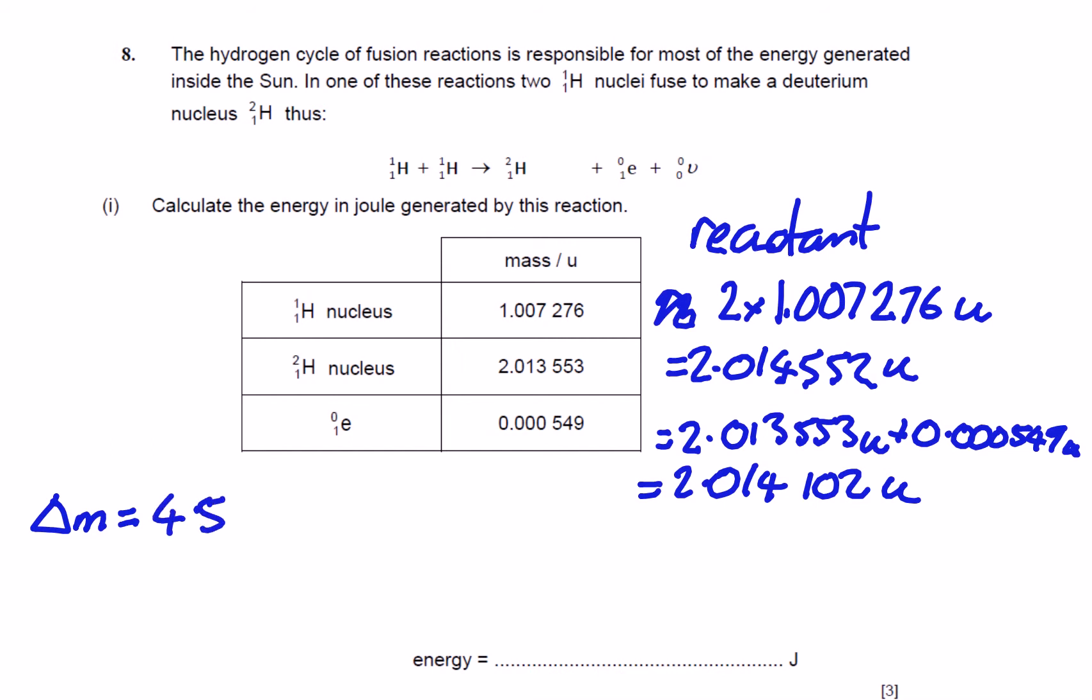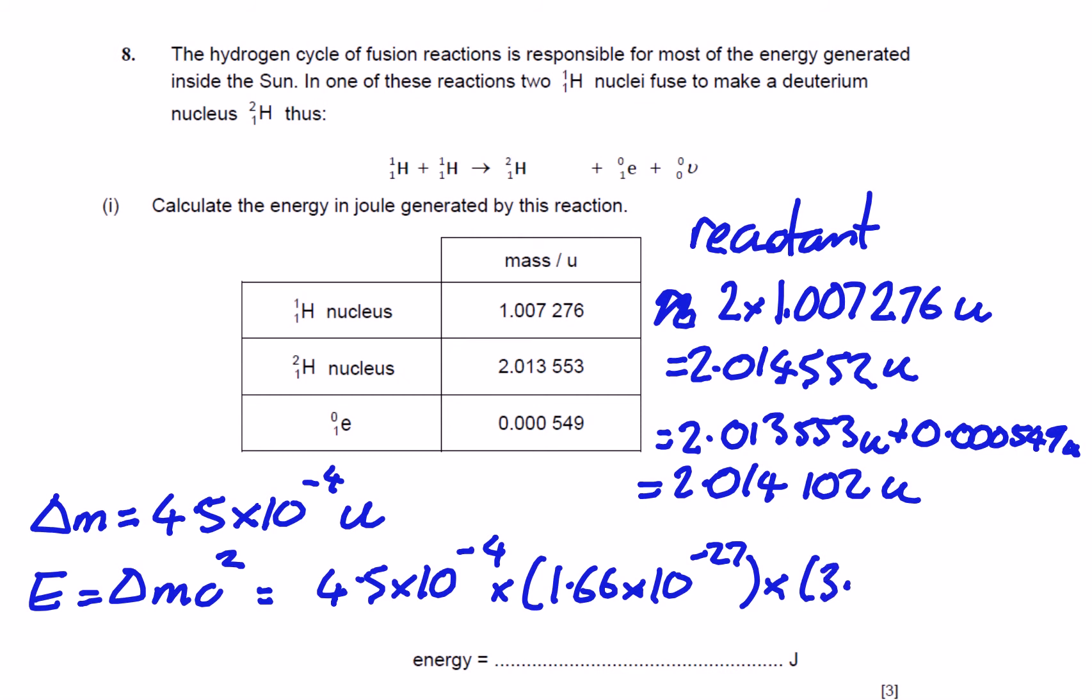And so the energy is equal to Δmc², which, substituting our numbers in, gives us 4.5 times 10 to the minus 4 times the atomic mass unit, which is 1.666 times 10 to the minus 27 kilograms, multiplied by the speed of light squared, which is 3.0 times 10 to the 8 squared. And after entering that in your calculator, that will come out as being 6.7 times 10 to the minus 14 joules.